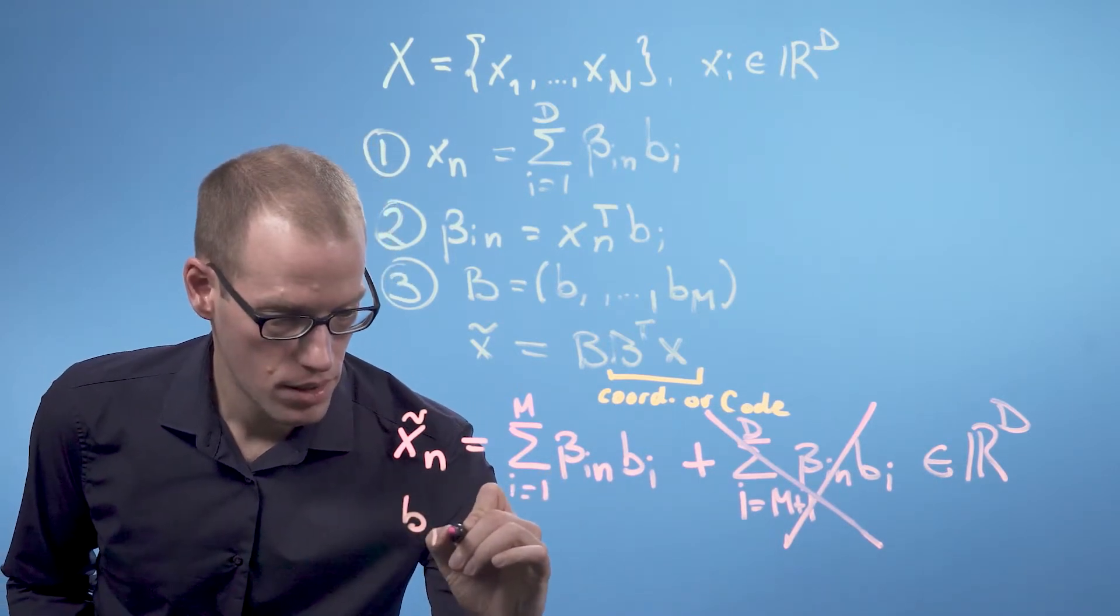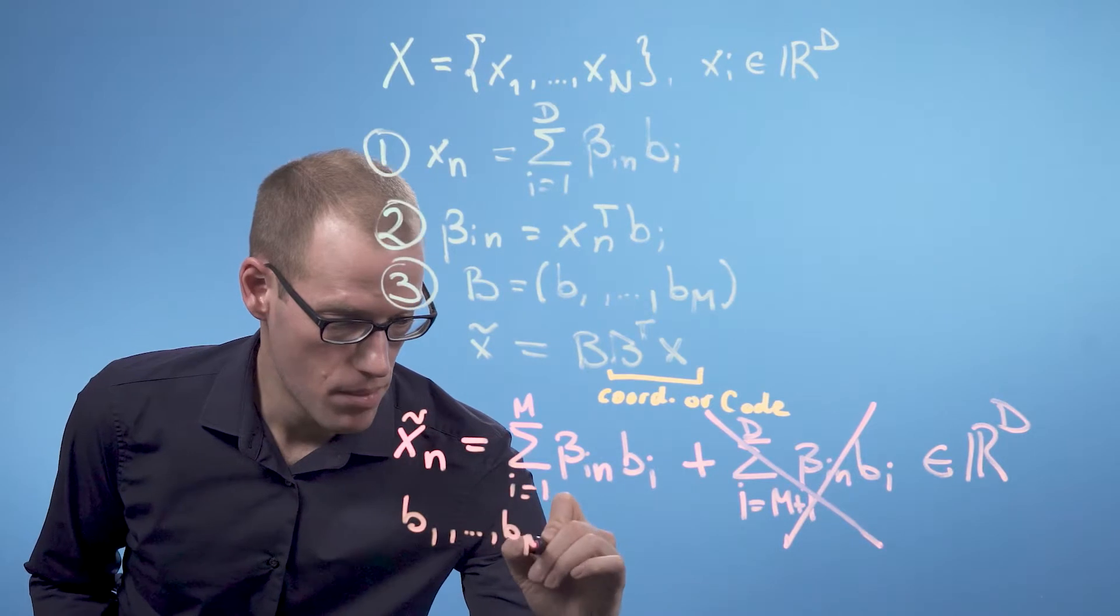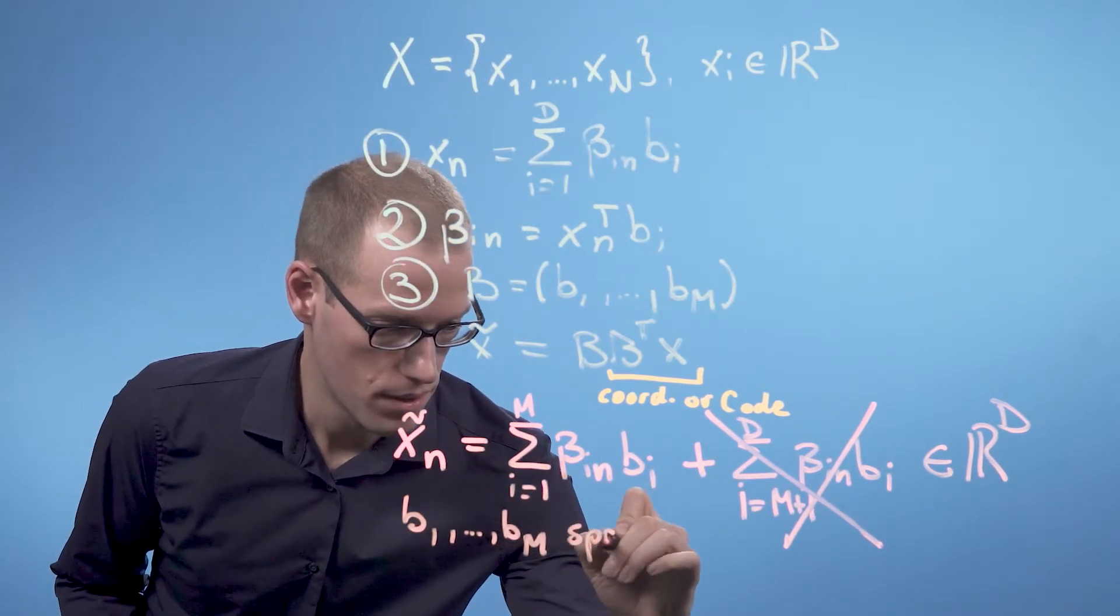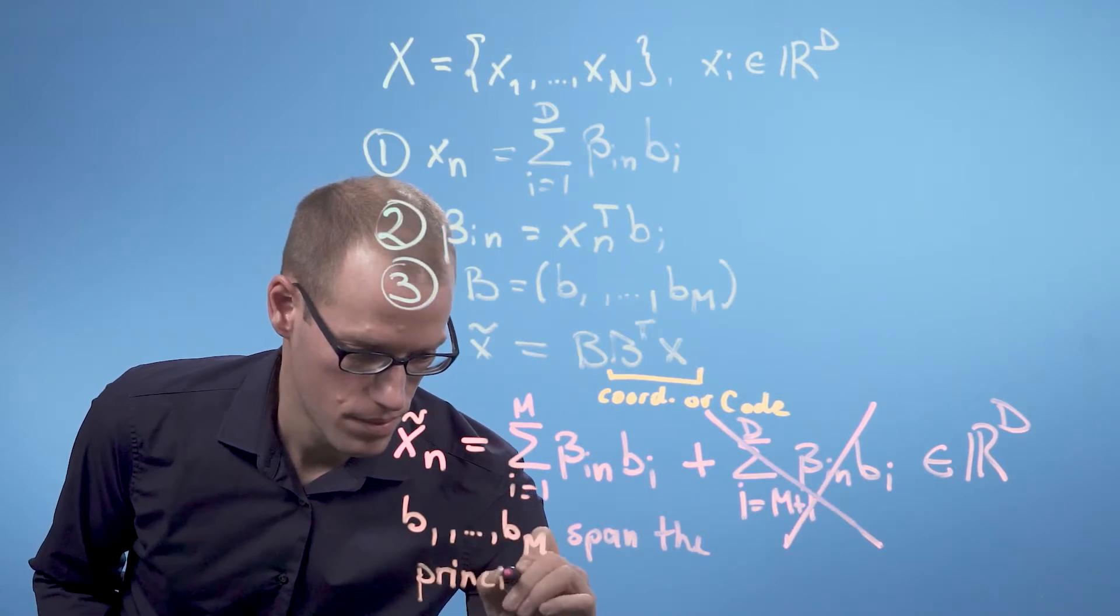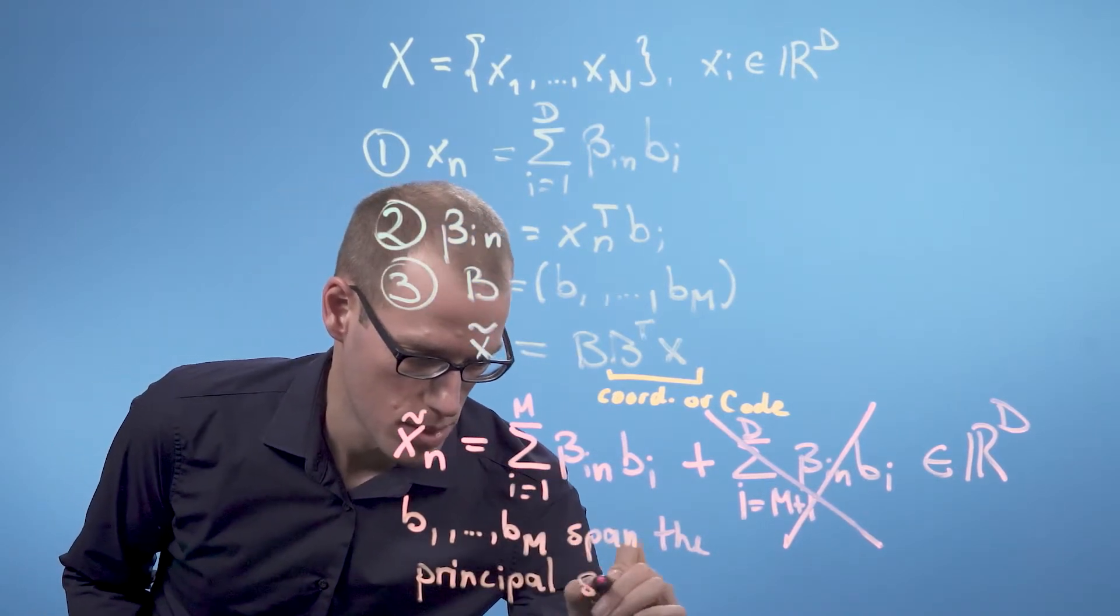So b_1 to b_m span the principal subspace.